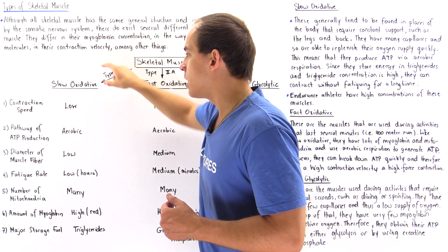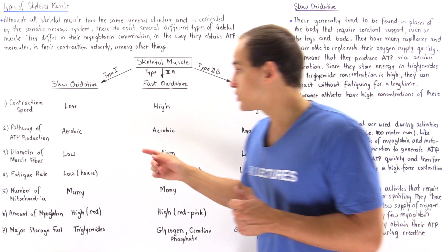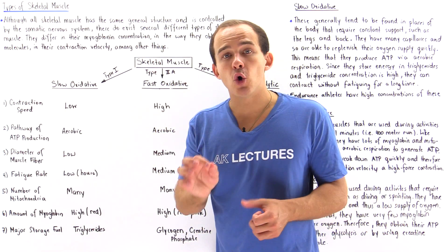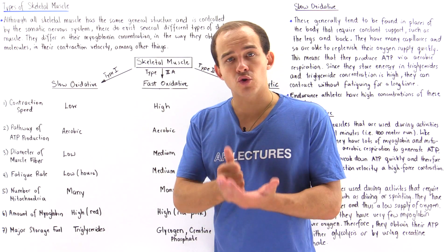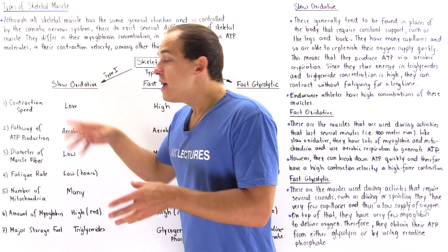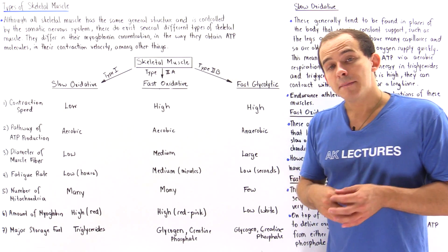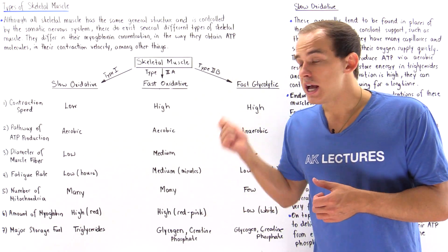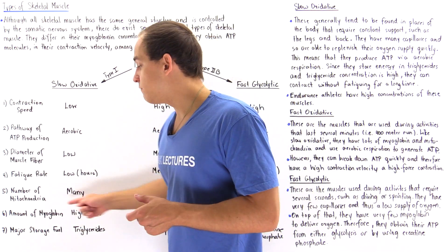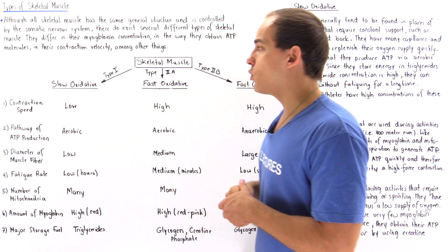The oxidative portion of slow oxidative simply means they use oxygen to form ATP, and that means the pathway of ATP production is aerobic. So they use not only glycolysis, but also the Krebs cycle and the electron transport chain to produce ATP. Because they have a lot of oxygen, they have a high concentration of myoglobin — the protein carrier that carries oxygen in muscle tissue — and these muscles appear red.